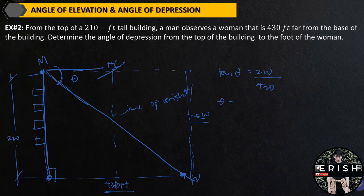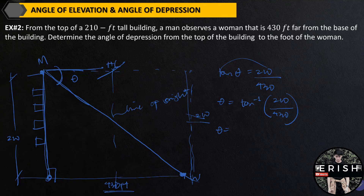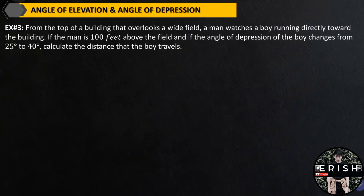The angle theta equals — transferring the tangent function — inverse tangent of 210 over 430. The angle theta, by calculating, is equal to 26 degrees. This is the answer for the angle of depression for example number 2.